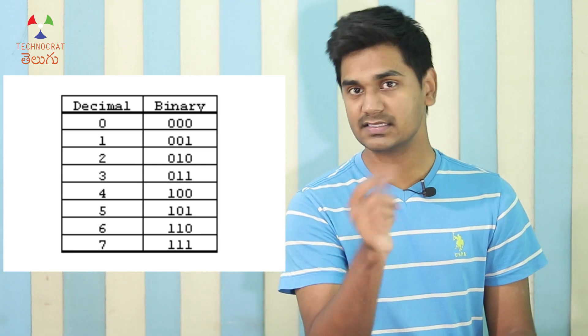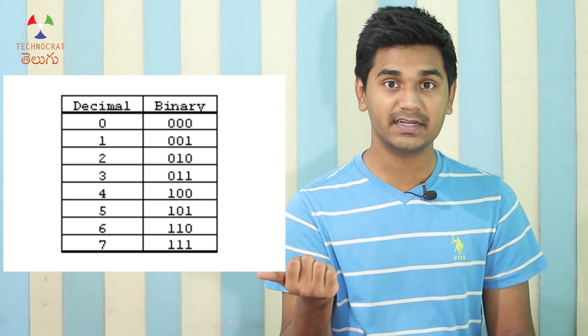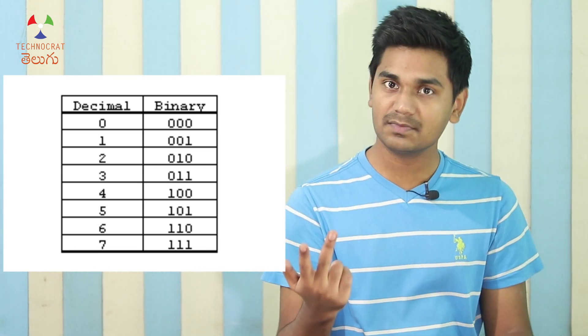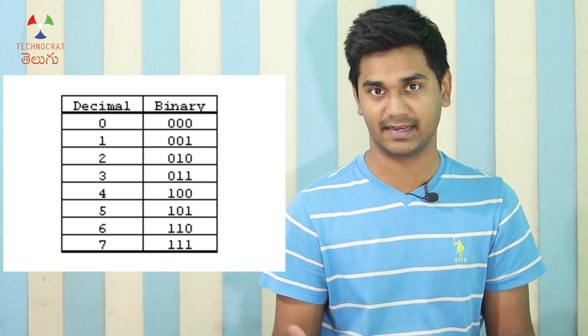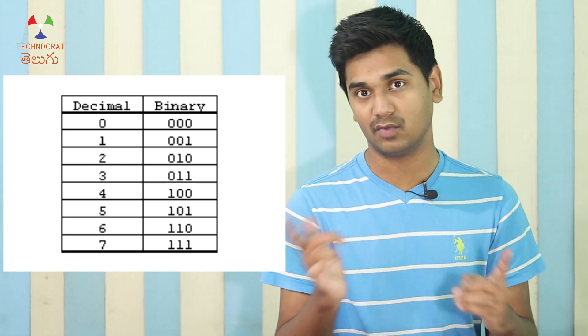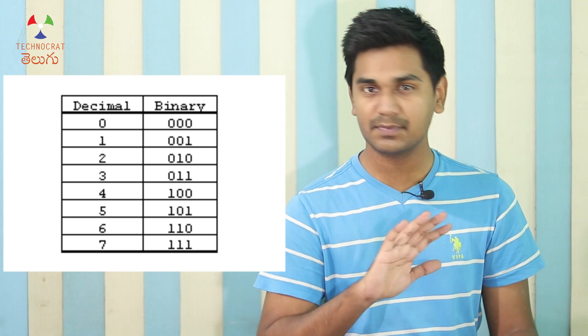In the decimal system we have 10 symbols. In the binary system we have only 2 symbols: 0 and 1. When we count to 2 in binary, we run out of symbols, so 2 is represented as '10' in binary. Similarly, 3 is '11' in binary. We use a bit for each 0 or 1. From 8 bits, we get one byte.